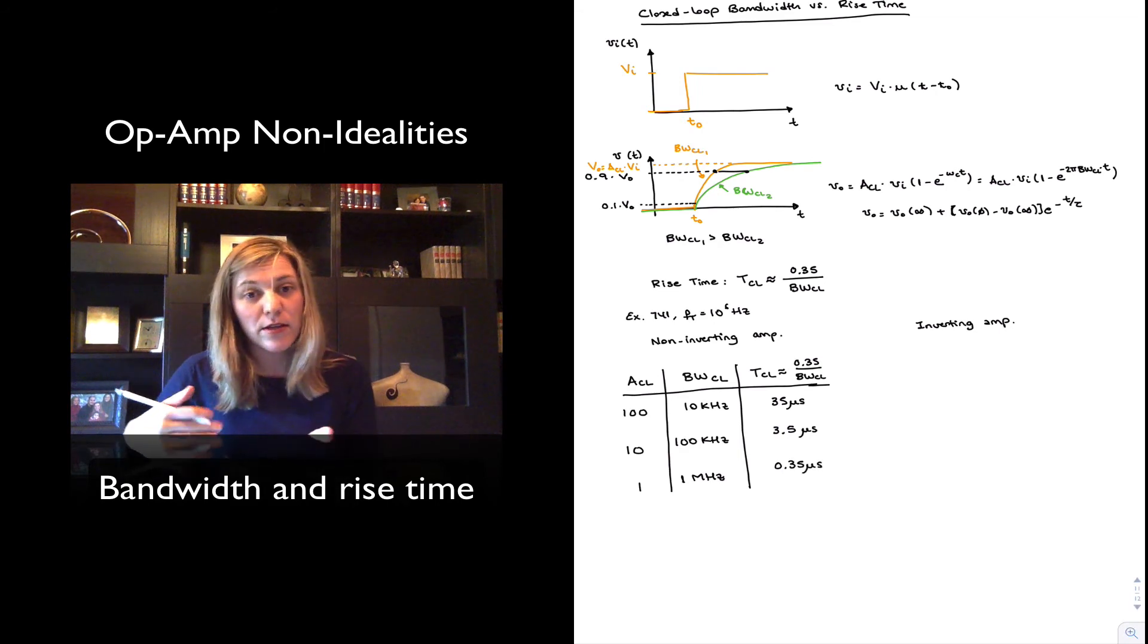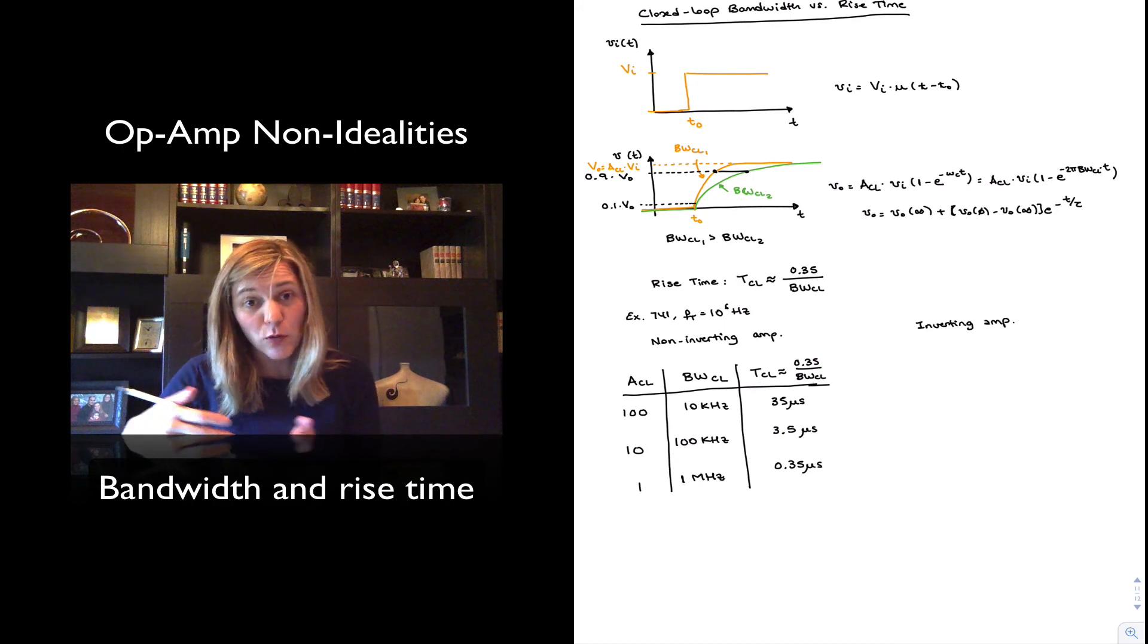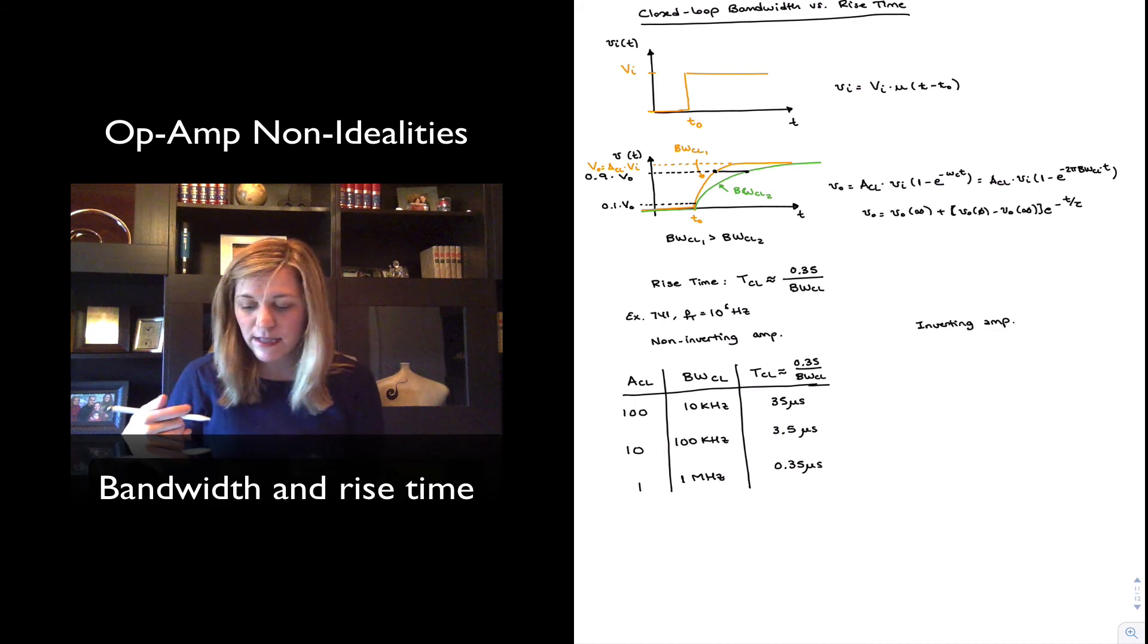So you can see how they're all related. And so as we decrease the gain, we gain more bandwidth, and therefore we have a faster amplifier, we're going to decrease the rise time as well.